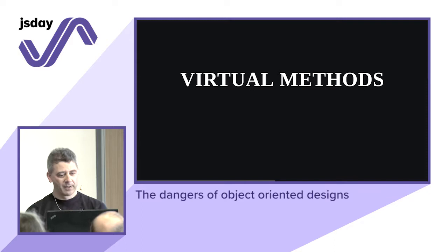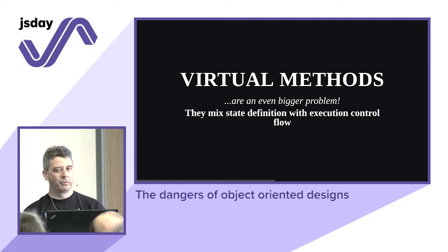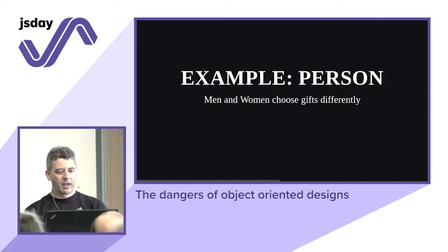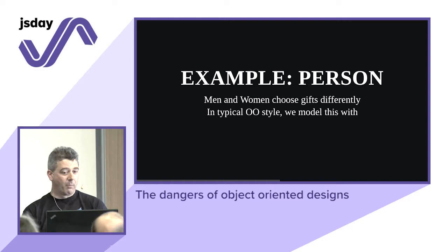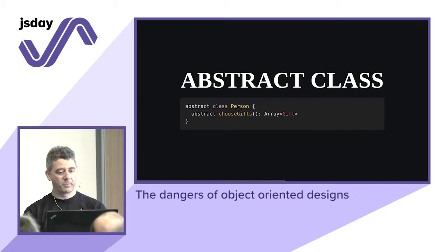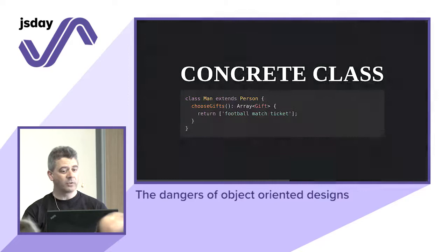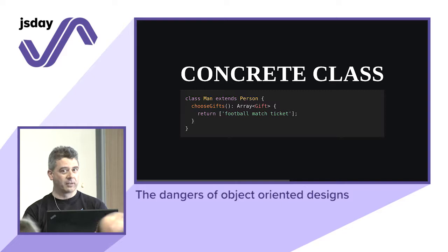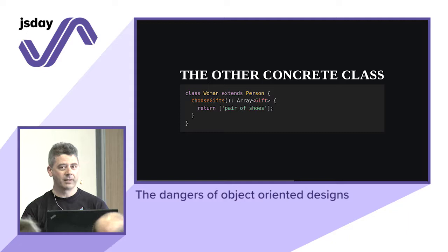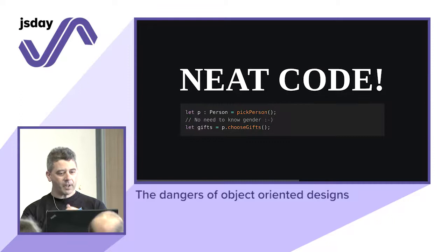Virtual methods sound very elegant but are an even bigger problem — they mix definition of state with execution control flow. Example: a Person class with a 'chooseGifts' abstract method. A Man subclass returns football match tickets; a Woman subclass returns a pair of shoes. The code looks very neat: you have a person, call chooseGifts, and it works.